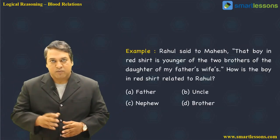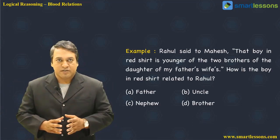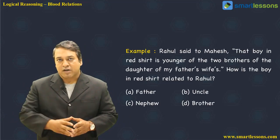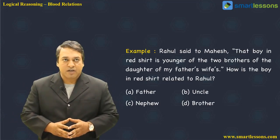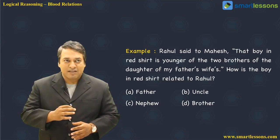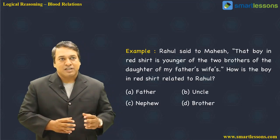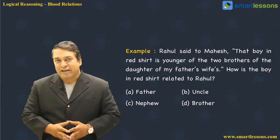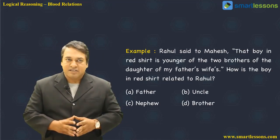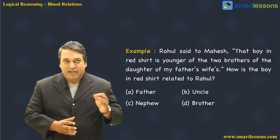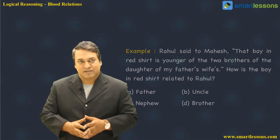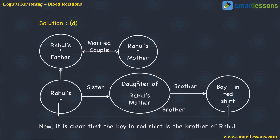Let us reiterate the statement. Rahul said to Mahesh that the boy in the red shirt is the younger of the two brothers of the daughter of my father's wife. Now, Rahul's father's wife is obviously his mother. Father's wife's daughter would be Rahul's sister. Let us start drawing the family hierarchy from Rahul as the base point.